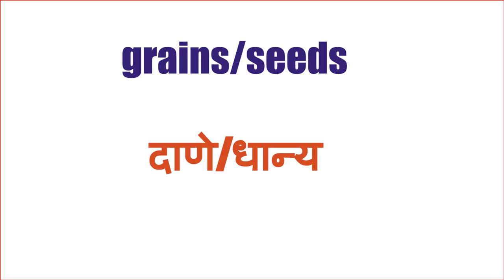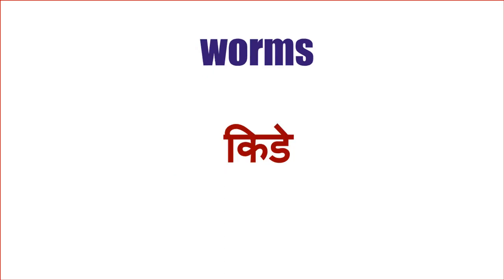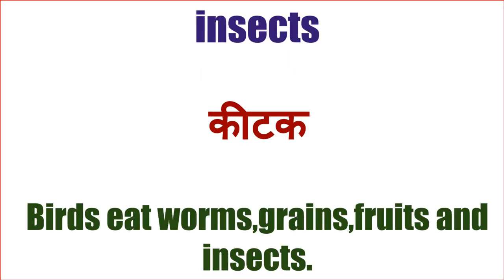Yaa pudil kahi shabda - Birds kaya khatat yaa sandar batil ahe. Grains kima seeds - Dane kima dhanyo. Worms - Kidde. Insects - Kitak. Birds eat worms, grains, fruits and insects. Pakshi kidde, dane, phle aani kitak khatat.